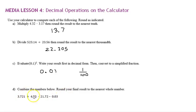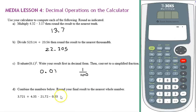Now, finally, we have a string of operations. Combine the numbers below, round your final result to the nearest whole number. The calculator knows the order of operations, so if you punch this in exactly as it is, it's going to do this multiplication first, then it will add, then it will subtract. But you need to put it all in together. Let's do that.